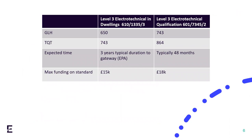Just to give a comparison to the existing apprenticeship qualification you're delivering, I've put together a small table to enable you to quickly compare some key areas. The new dwellings qualification has 650 guided learning hours, which is 93 hours less than the current apprenticeship qualification. The dwellings electrician apprentice would typically take three years to get to the point where they can undertake the EPA. Maximum funding for this apprenticeship is £15,000.